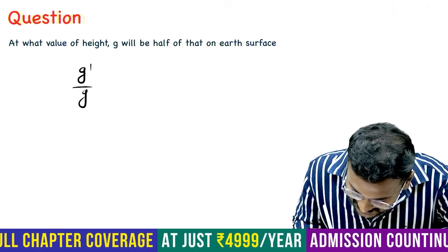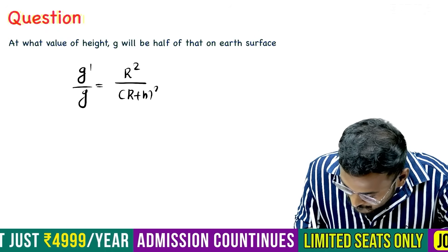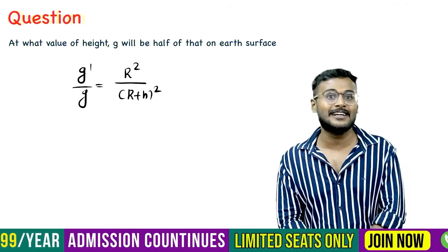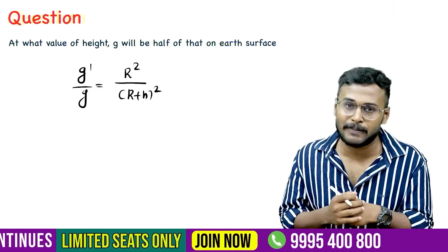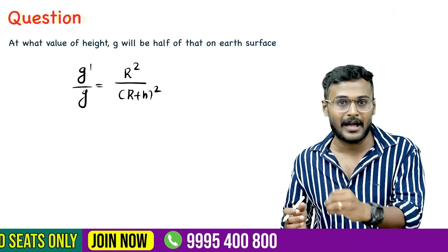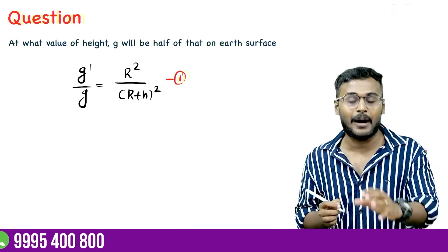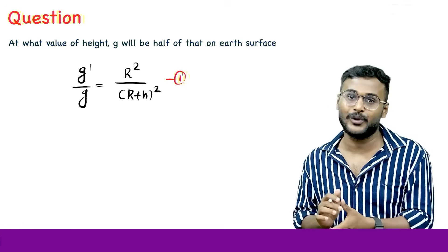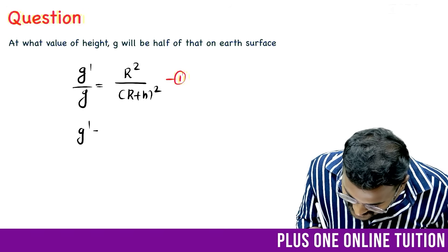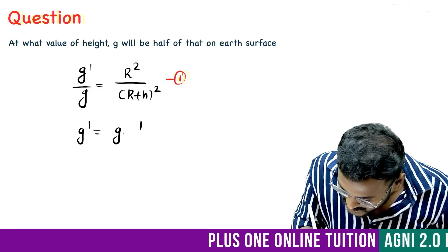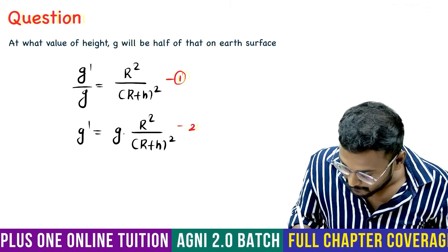G dash by G equal to R square divided by R plus H whole square. This is the first step — equation number 1. G dash by G equal to R square divided by R plus H whole square. Equation number 2.